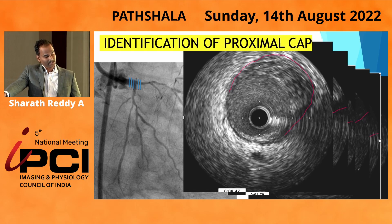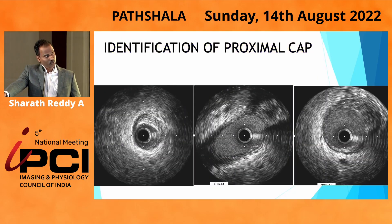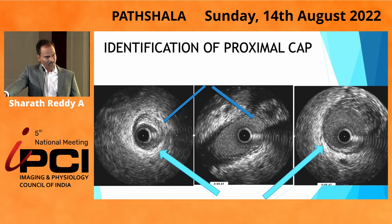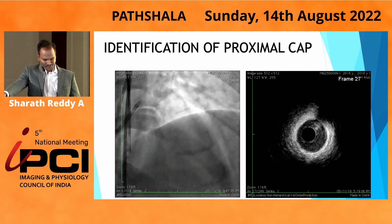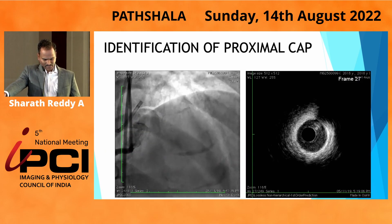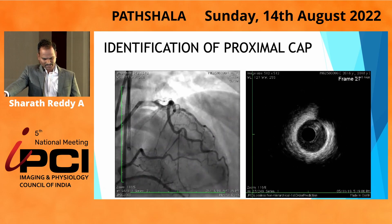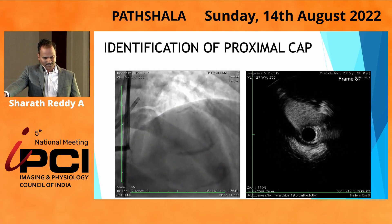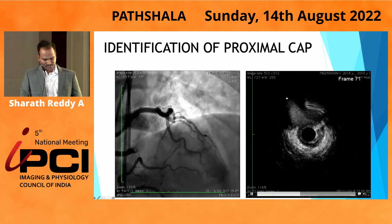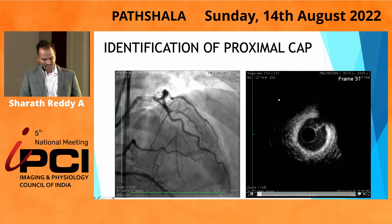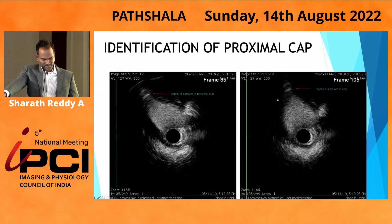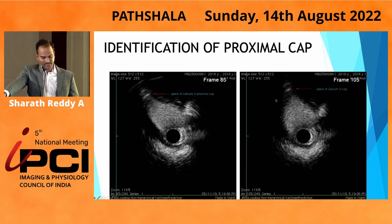You can see the sudden jump in vessel size. Two things help you identify the proximal cap: one is the absence of media in the zone, and the second is the sudden jump in vessel size, which tells you where the ostium is. On IVUS, there is a clear entry point, and you can also see a fibrocalcific speck sitting there, which also dictates which wire you will choose.